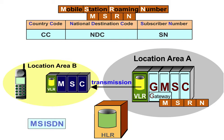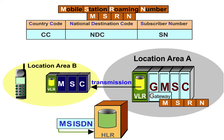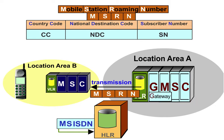While the MSISDN only establishes a connection to the HLR, the MSRN is used to route the call to its actual destination.